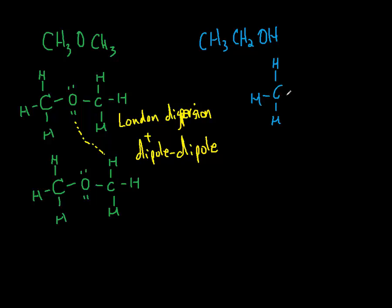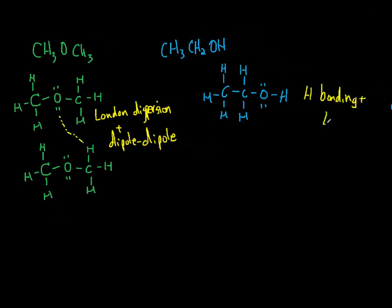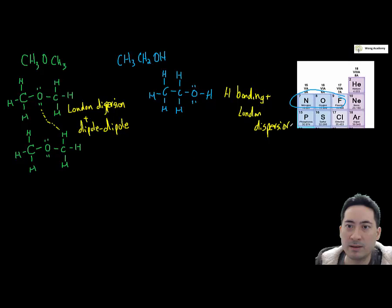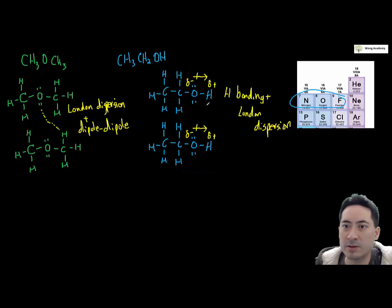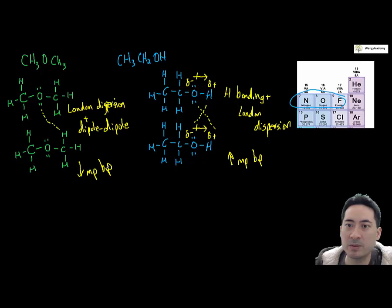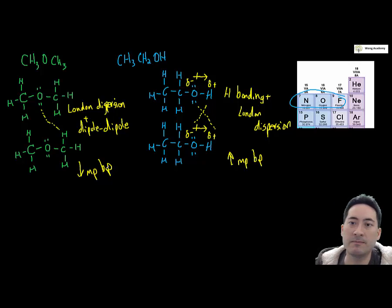Let's compare methoxymethane with an alcohol. They both have two carbons, so they have very similar molecular weights, meaning that won't influence the comparison — we can look purely at their intermolecular forces. Drawing the Lewis structure, we can see that methoxymethane has dipole-dipole bonding, whereas in alcohol there's an O bonded to H, so there's very strong hydrogen bonding. We can confidently predict that the melting and boiling point of the alcohol will be much higher than that of methoxymethane.